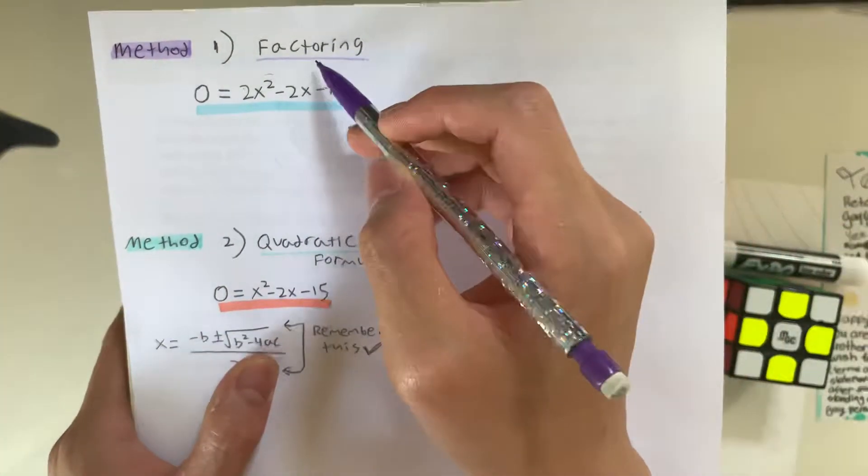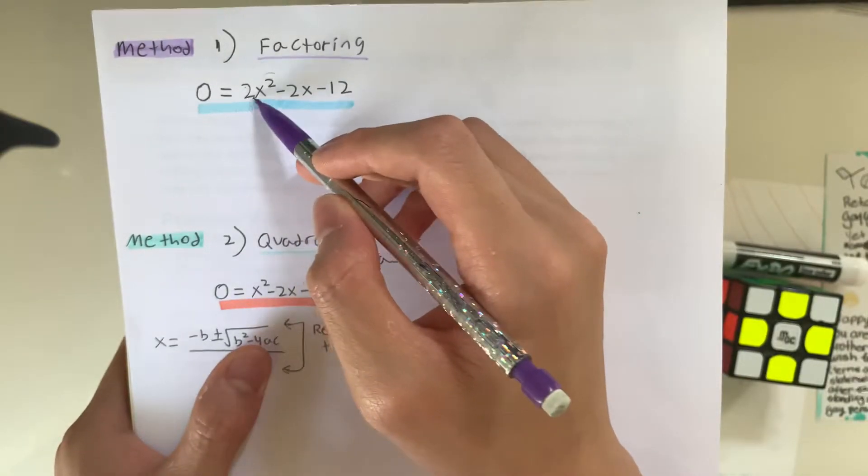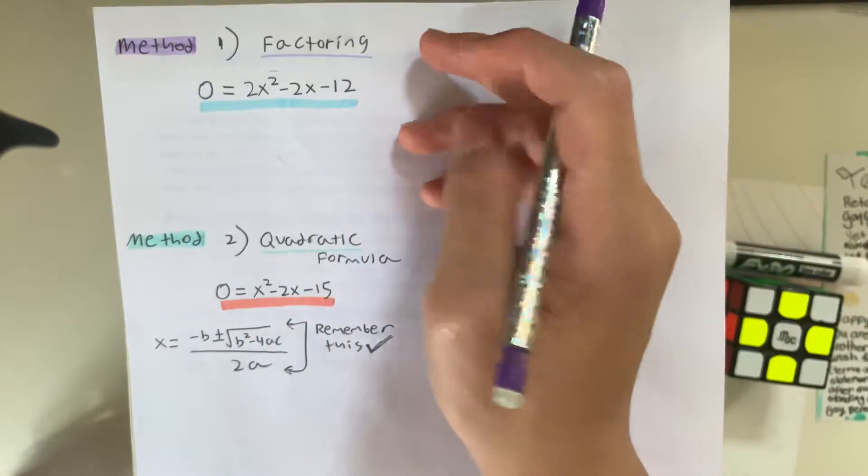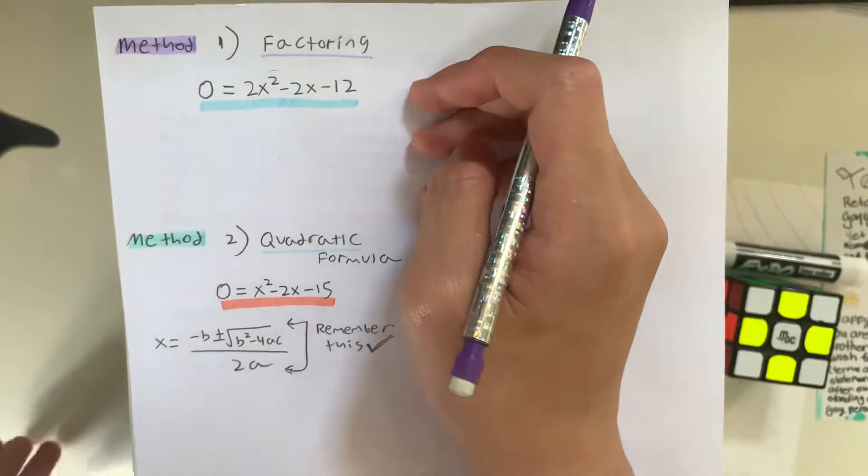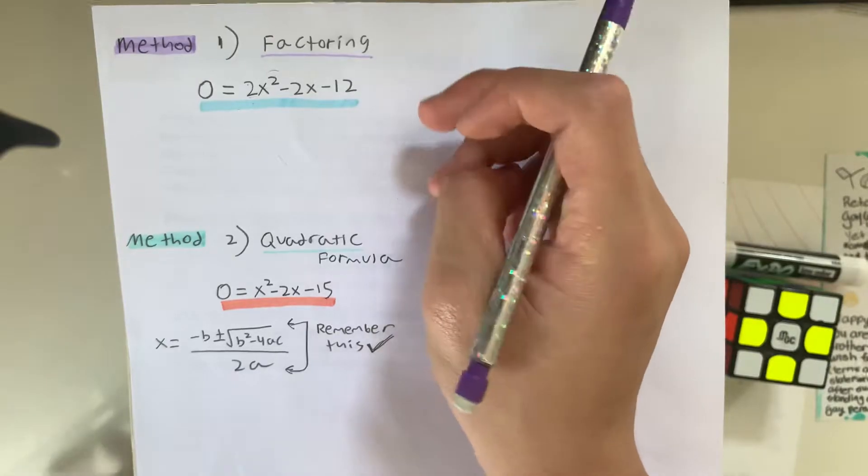So, the first method is called factoring, which we have to factor in this equation. If you guys look at my TikToks, you guys are going to know how to factor. If not, comment below, and I might make a video on factoring.